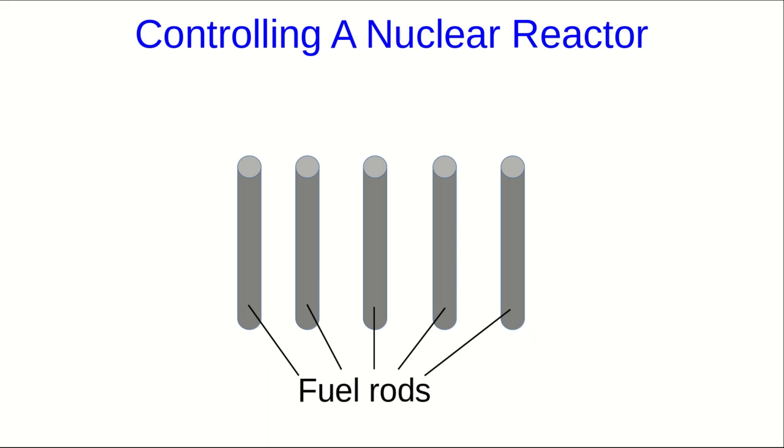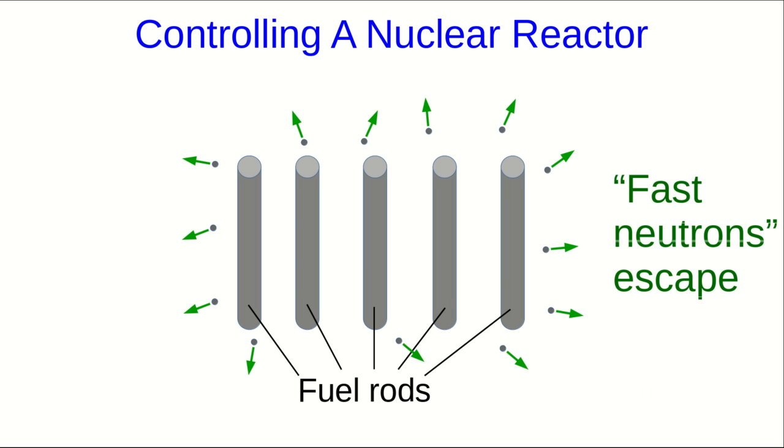Let's now discuss how a nuclear reactor is actually controlled. In the reactor, the uranium is often in the form of fuel rods, and if we just assemble a bunch of fuel rods together, what will tend to happen is that the neutrons will just escape. The neutrons, which are produced by fission reactions, are moving very fast, and these fast neutrons have a low probability of being absorbed by the uranium nuclei, and so we get no sustained chain reaction if we do this.